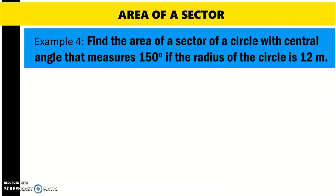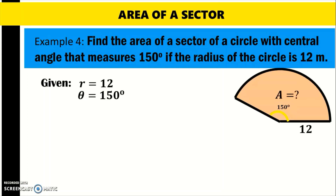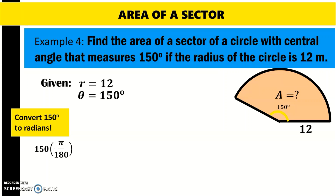Example 4: Find the area of a sector of a circle with central angle that measures 150 degrees if the radius of the circle is 12 meters. The angle is again in degrees, so we need to convert to radians. The given are radius equals 12 and central angle equals 150 degrees. To convert 150 degrees, multiply by pi over 180. Dividing both 150 and 180 by 30: 150 divided by 30 is 5, and 180 divided by 30 is 6. So we have 5 pi over 6. This 150 degrees equals 5 pi over 6 in radians.